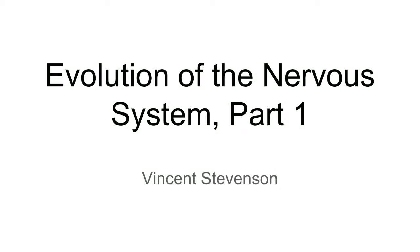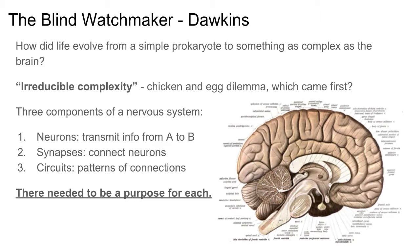In this video I'm going to be discussing the evolution of the nervous system, and to me this is one of the most fascinating aspects of biology. To ask ourselves how can we go from something as simple as a prokaryote with no membrane-bound organelles, no chromosomes, no mitochondria, and turn it into something as complex as a human brain.